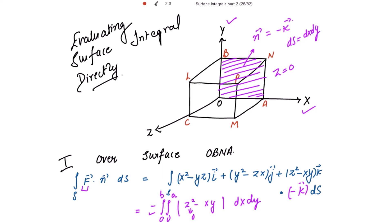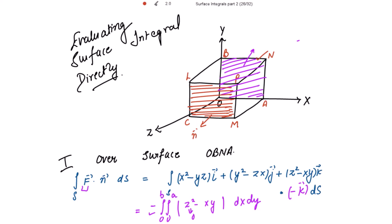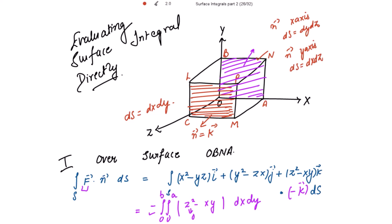For the opposite surface (z = c), the outward unit normal is k and ds = dx dy. The rule is: if the unit normal is along the z-axis, take ds = dy dz; along x-axis, ds = dy dz; along y-axis, ds = dx dz.